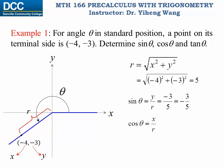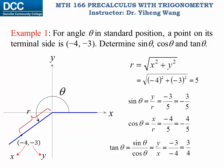For cosine theta by definition it equals x over r: x is negative four, r is five, therefore cosine theta is negative four over five. For tangent theta, it is y over x, therefore it equals positive three over four. That completes this problem. However, you might argue how do you know this is angle theta — we only know there's a point on the terminal side. The angle could be negative or could look different, but that does not change the answer because they are coterminal angles, and coterminal angles have the same trigonometric function values.